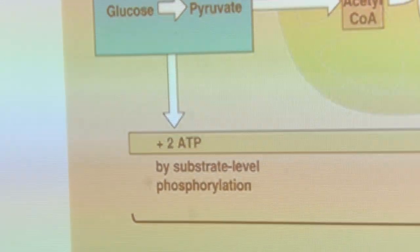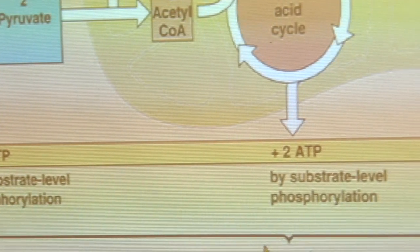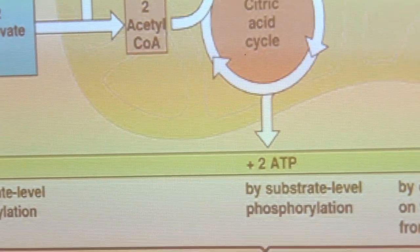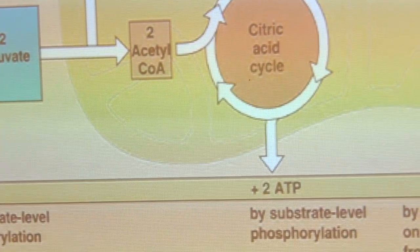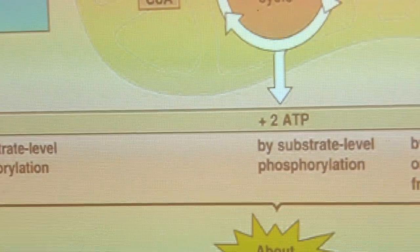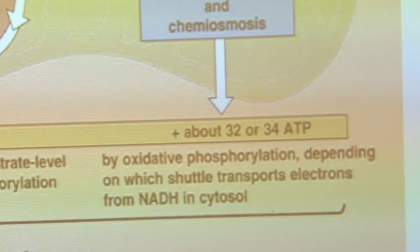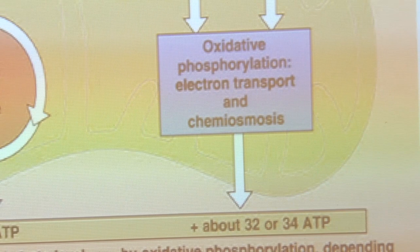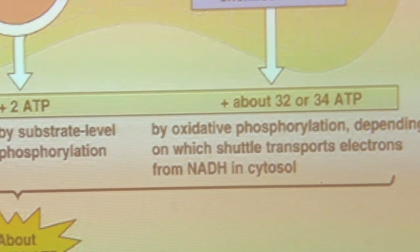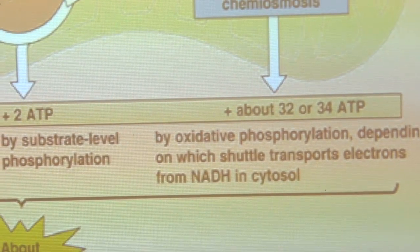Krebs cycle, citric acid cycle, produces about 2 ATP, and electron transport phosphorylation produces 32 or 34.